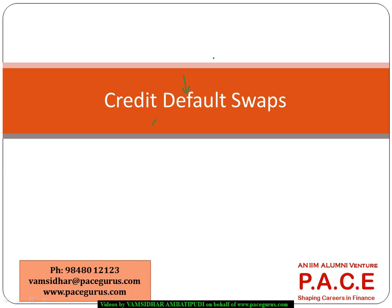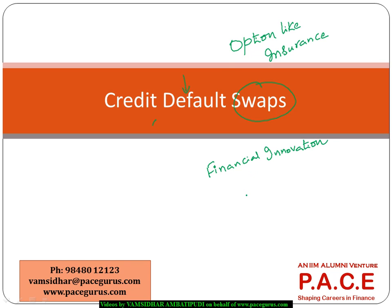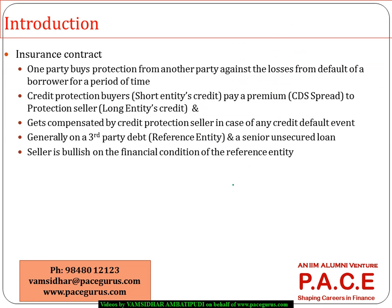Credit default swaps, though they are called swaps, have a lot of option-like characteristics and insurance-like characteristics. They are really one of the wonderful financial innovations in the modern-day world. We would like to see how credit default swaps work and what the typical pricing and valuation mechanism involved with them is, so we can understand how they have become one of the key tools in current financial markets.